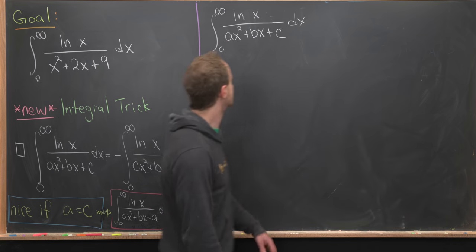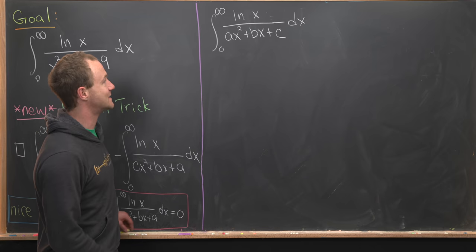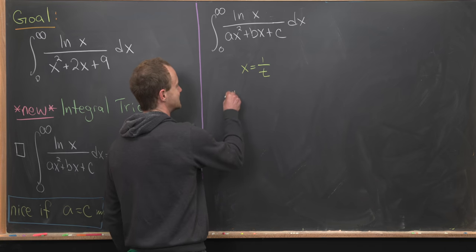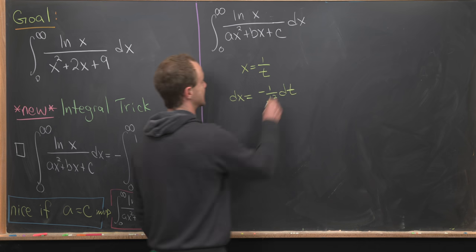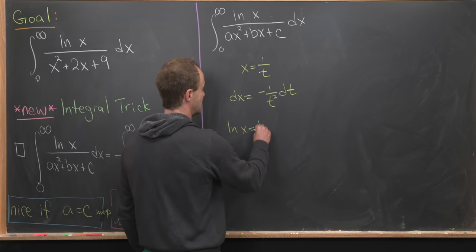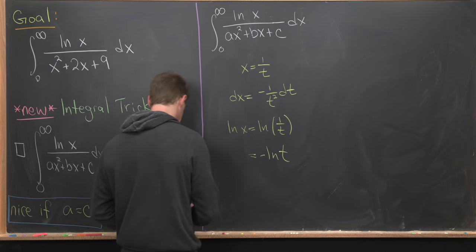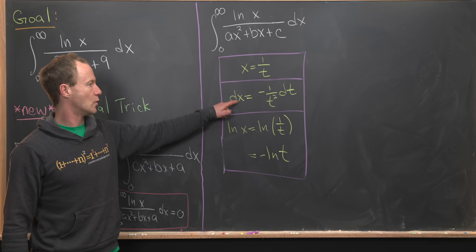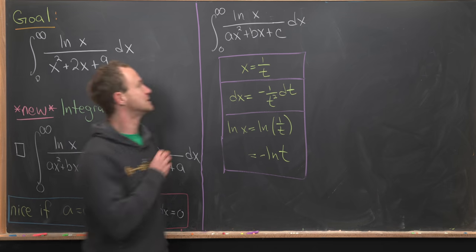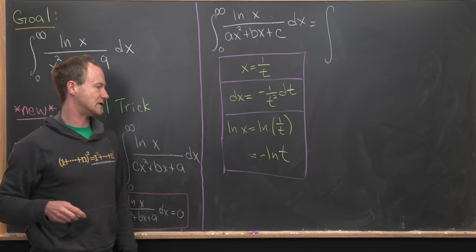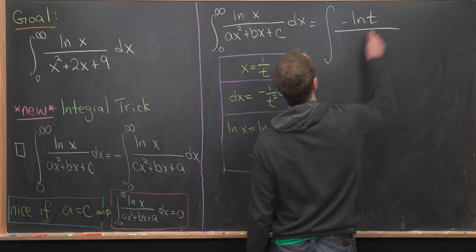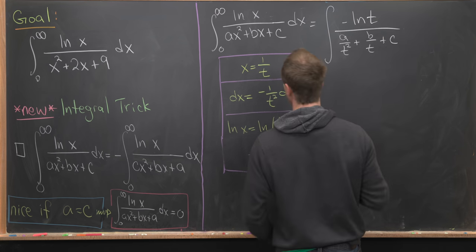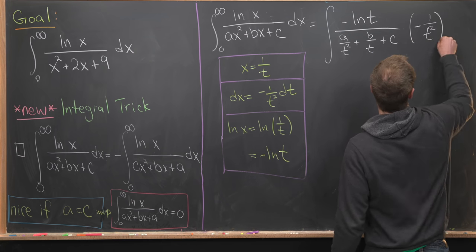Let's prove this integration trick, starting from the left-hand side with the substitution x = 1/t. That means dx = −1/t² dt, and ln(x) = ln(1/t) = −ln(t). These are the three main components we'll use to transform the integral. The numerator becomes −ln(t), and the denominator becomes a/t² + b/t + c, with the differential −1/t² dt.